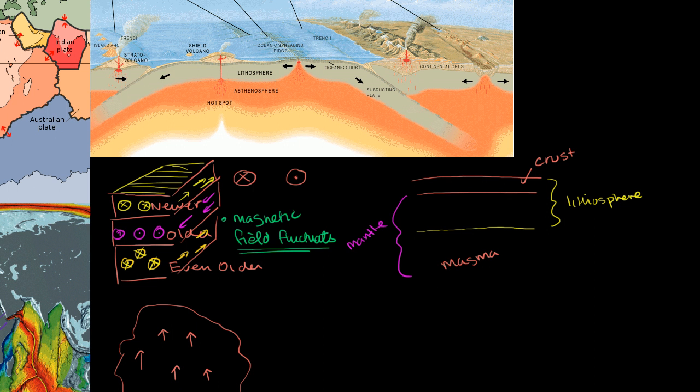Now there's some debate, and we'll talk about this in the next video, of how hot spots actually form. It could be these mantle plumes that start at the border between the mantle and the core. It could be some type of convection currents in the actual mantle. We'll talk more about that in the next video, or maybe a few videos from now. But let's take it for granted that hot spots form in the mantle. So let's say we have an area of magma right here that is particularly hot.